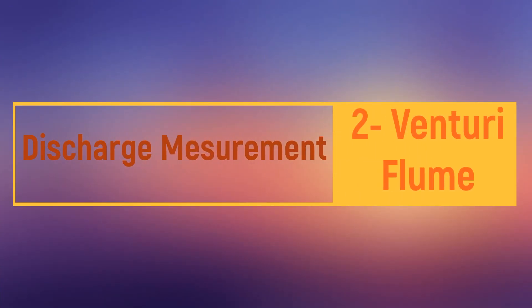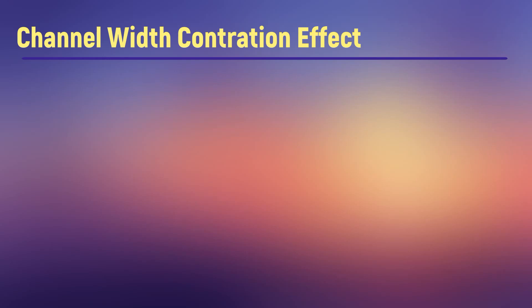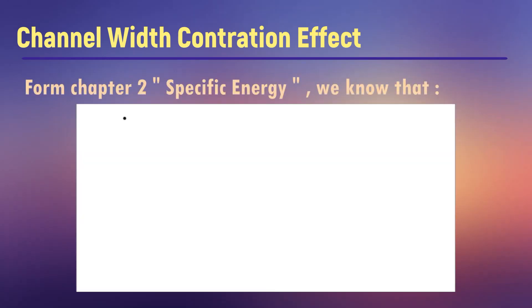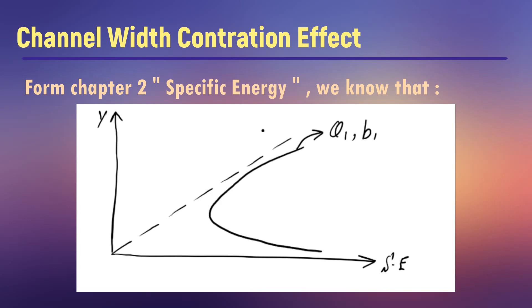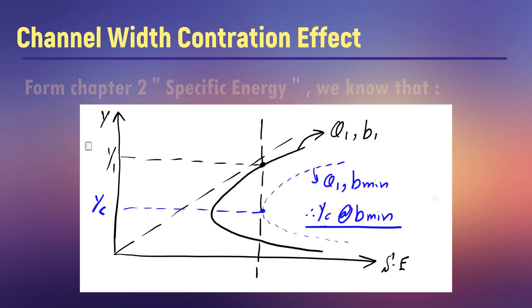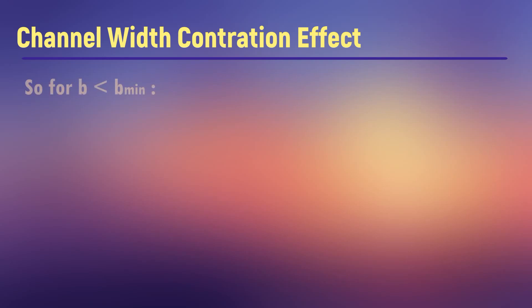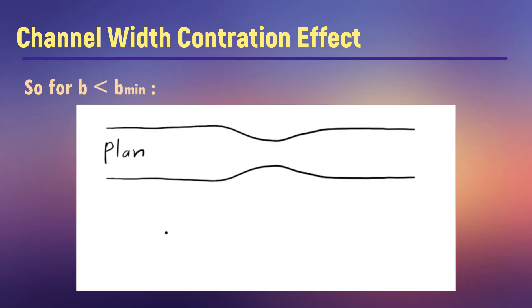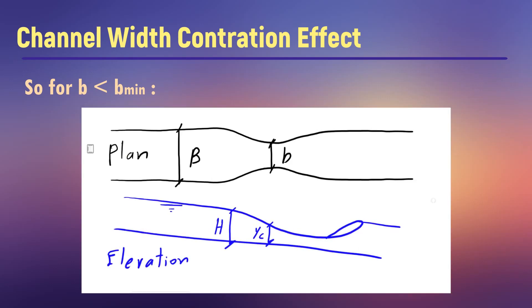Discharge measurement using a venturi flume. What is the effect of bed contraction? From chapter two specific energy we know that for width less than the minimum width, the water depth just inside the venturi flume will equal to critical depth and the head just upstream it will equal to h.